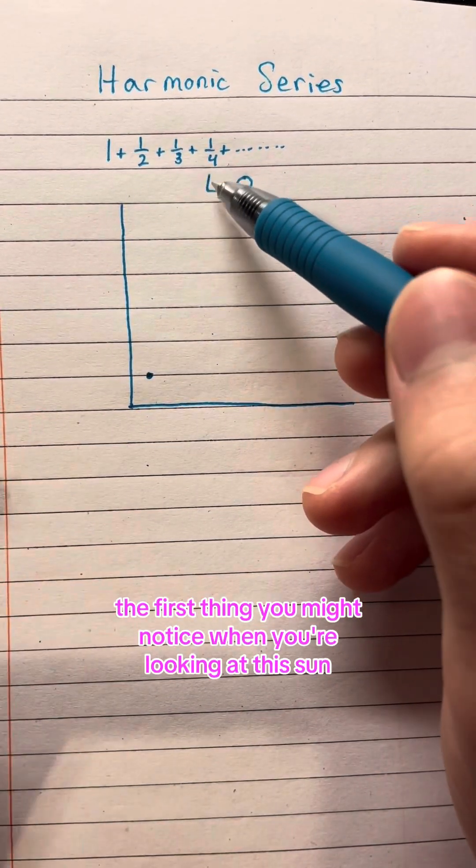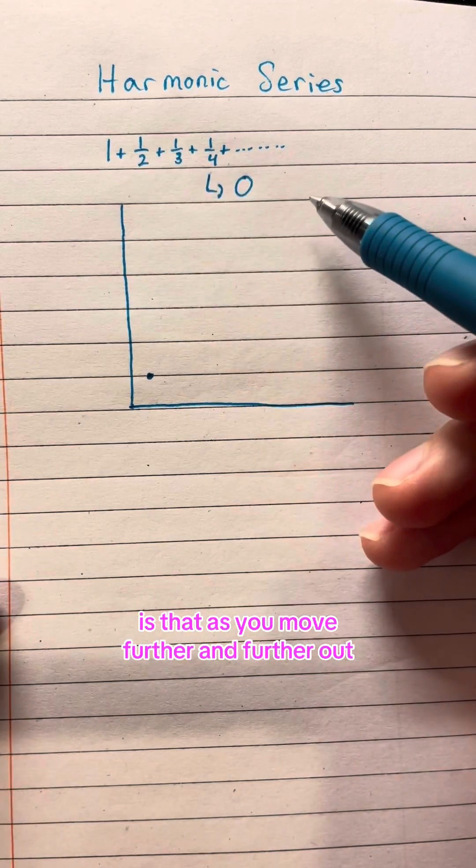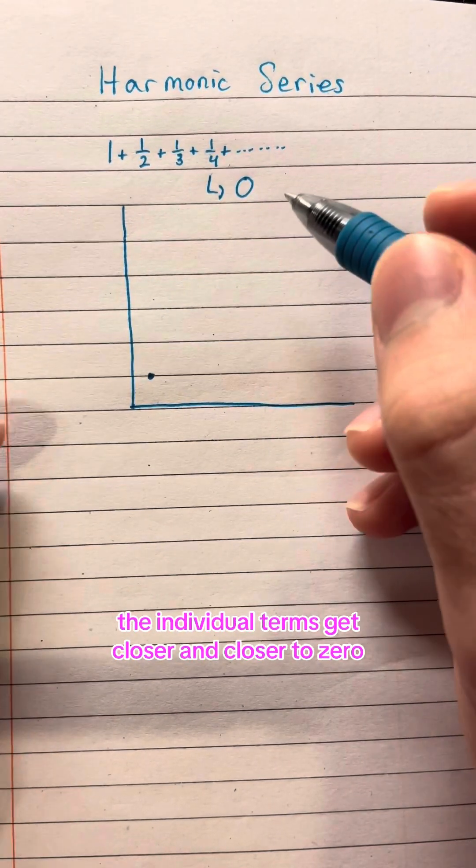The first thing you might notice when you're looking at this sum is that as you move further and further out, the individual terms get closer and closer to zero.